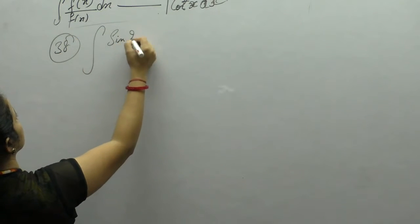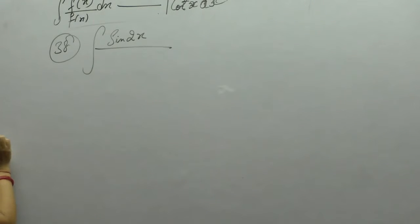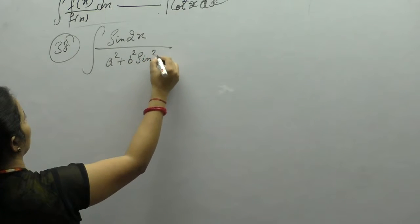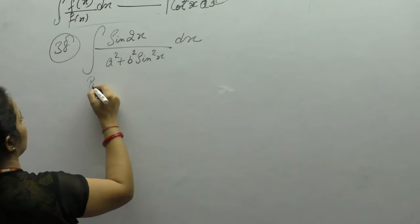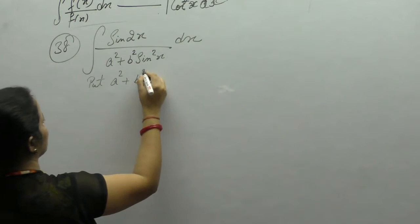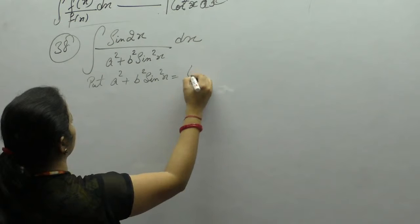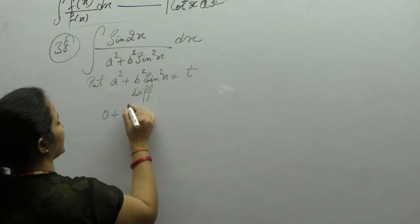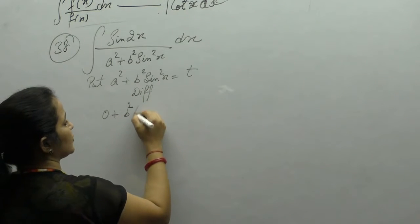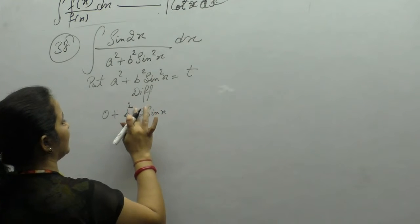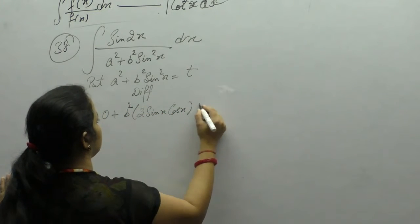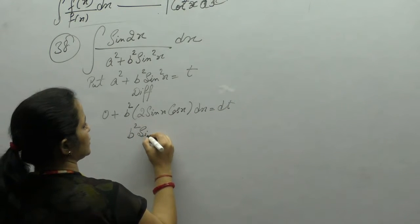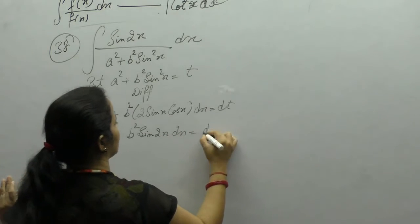Integration of sin 2x upon (a² + b² sin²x) dx. Put the denominator as t: a² + b² sin²x = t. Differentiate: derivative of a² is 0, b² is constant, derivative of sin²x is 2 sin x, and derivative of sin x is cos x. Applying the formula 2 sin x cos x = sin 2x.